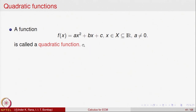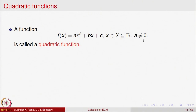A function f(x) given by f(x) = ax² + bx + c for x belonging to a subset of the real line, where a ≠ 0 (if a = 0 this just becomes a linear function), is called a quadratic function. It has three constants: a is the coefficient of x², b is the coefficient of x, and c is the constant term.